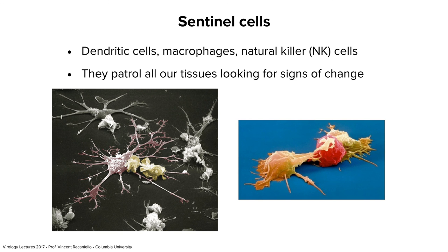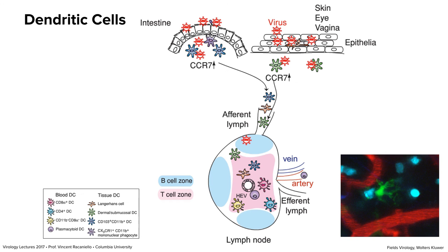Interferons are part of the cytokine response of the innate immune system — sensing foreign nucleic acids and proteins that make cytokines, some of which are interferons that establish an antiviral state. Other components of the innate immune system include dendritic cells, macrophages, and natural killer cells. On the left is a dendritic cell with lovely long processes — that's why they were originally called dendritic cells, they look like dendrites in the nervous system. These cells patrol your body continuously, floating around in body cavities, tissues, and circulation, looking for something foreign.